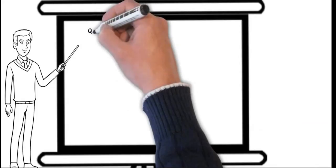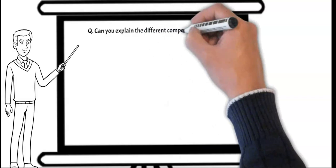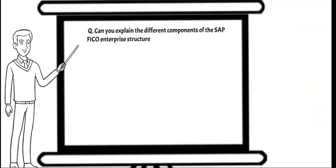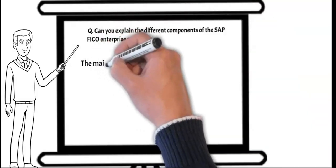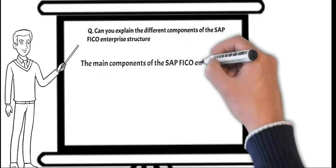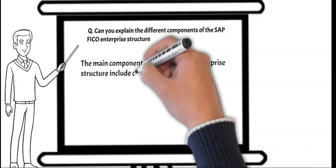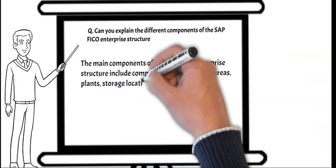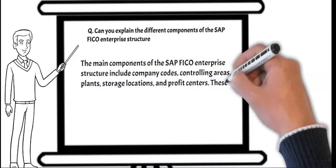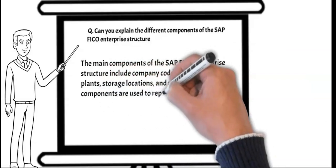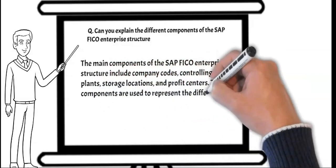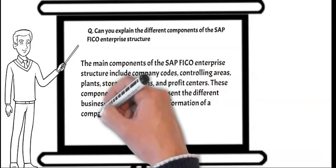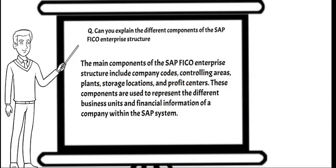Next question: can you explain the different components of the SAP FICO enterprise structure? You can reply: the main components of the SAP FICO enterprise structure include company code, controlling area, plant, storage location, and profit center. These components are used to represent the different business units and financial information of a company within the SAP system.